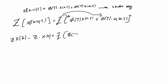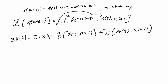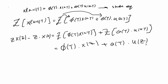We can distribute the Z-transform because it is a linear operation. The right-hand side gives Φ(T) times X(z), since Φ(T) can be treated as a constant matrix, plus Θ(T) times U(z), since the Z-transform of U(kT) is U(z) and the Z-transform of X(kT) is X(z). The Z-transform of X(k+1, T) is Z·X(z) minus Z·X(0).